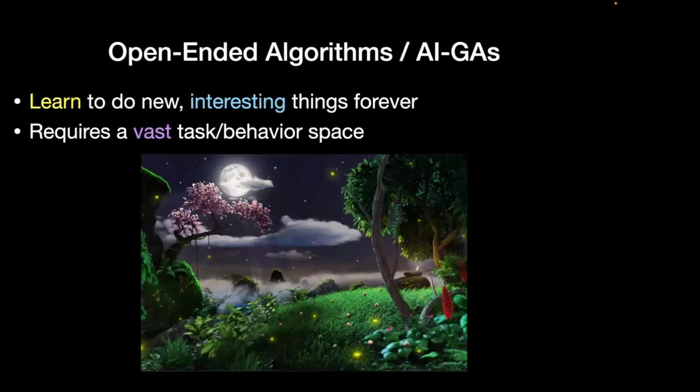One of the main goals — if not the main goal — of open-endedness and AI generating algorithms is to basically learn to do new interesting things forever. That's what we want our agents to do. And to truly do that, you have to be in a vast search space where there's all sorts of possible things that you could do.